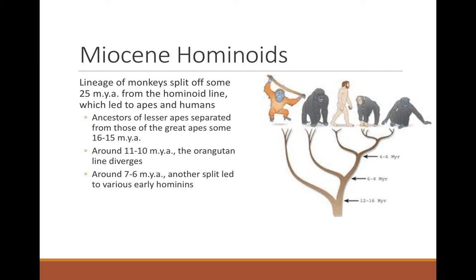The lineage of monkeys split from hominoids around 25 million years ago. Ancestors of the lesser apes split from great apes around 16 to 15 million years ago. The orangutan line diverges around 12 to 10 million years ago, and around the 7 to 6 million year mark we see the divergence giving rise to modern hominins. There are multiple ways to draw phylogenetic trees — the one shown here further notes that chimps and bonobos split around 3 million years ago. Biologically, we are primates, with larger brains and more complex culture, but primates nonetheless.